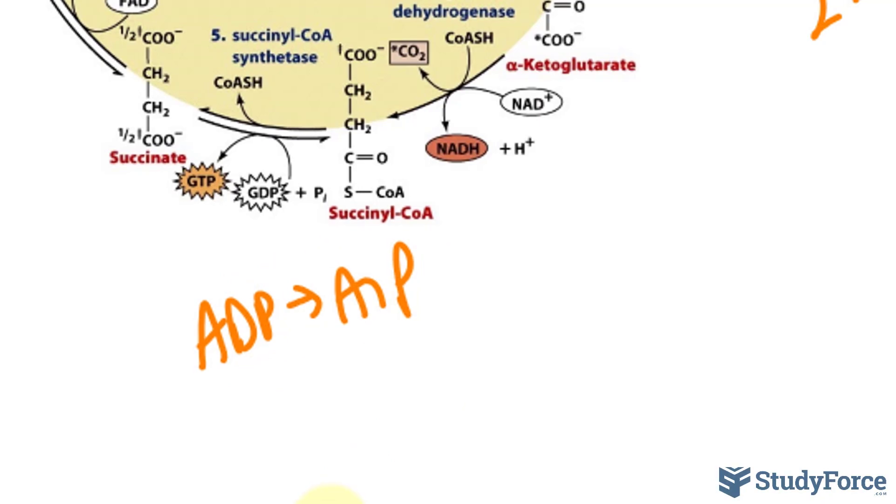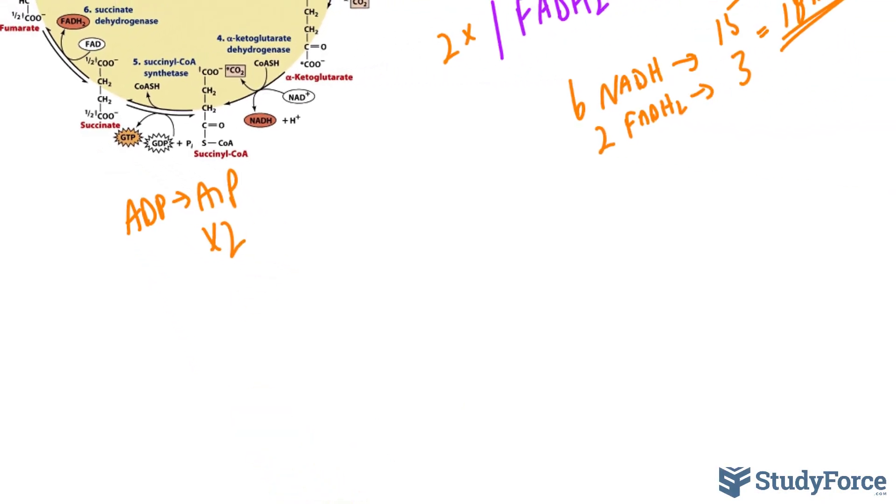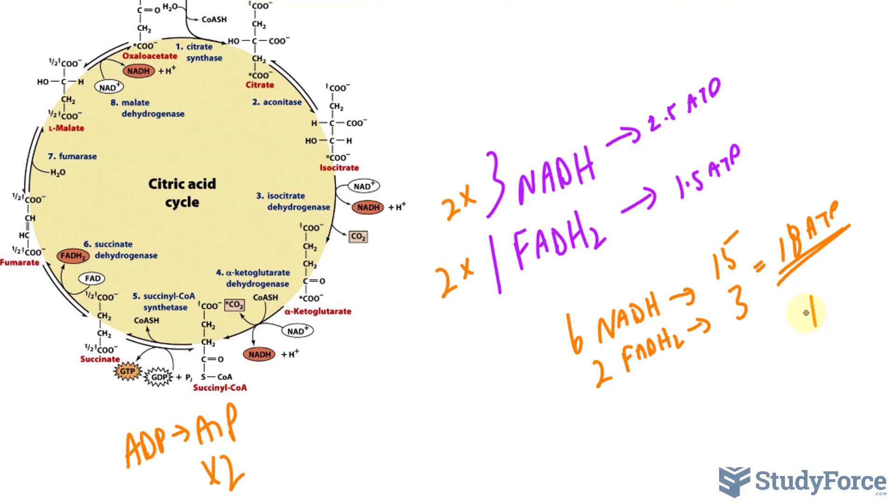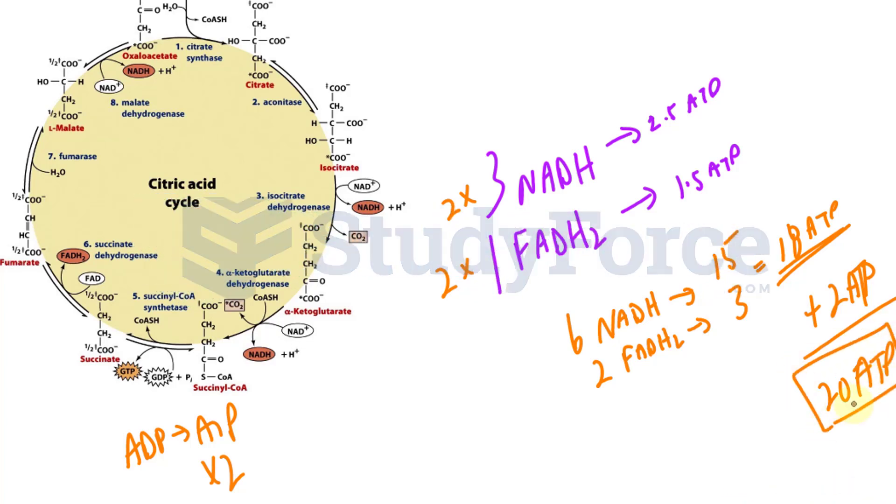And because this is happening twice, two cycles, we multiply this by 2, and we will add another 2 ATP to this forming 20 total, theoretically.